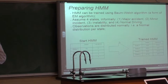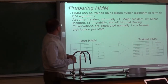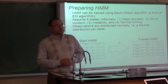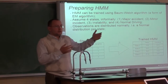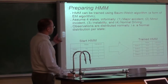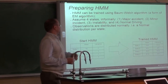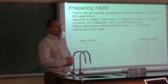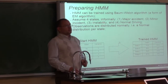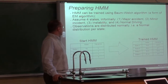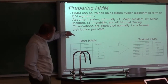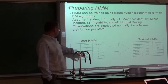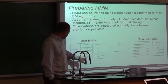How do we prepare an HMM? An HMM can be trained, and the training algorithm is Baum-Welch, which is a form of expectation maximization — the same EM algorithm adjusted for hidden Markov models. For this application we assume four states. Quite informally we call them: major accident, minor incident, instability, and normal drive. We also assume that observations are distributed normally — one normal distribution per state. As a starting point before training, for state one we assumed mean speed of 10 and variance of 1; for state two, mean 20, variance 1; and continuing at 40 and 60.